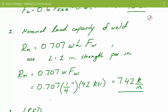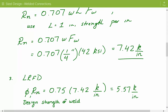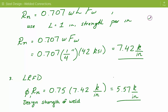For LRFD, the design strength of the weld equals the resistance factor times the nominal load capacity: 0.75 times 7.42 kips per inch, giving a design strength of 5.57 kips per inch.